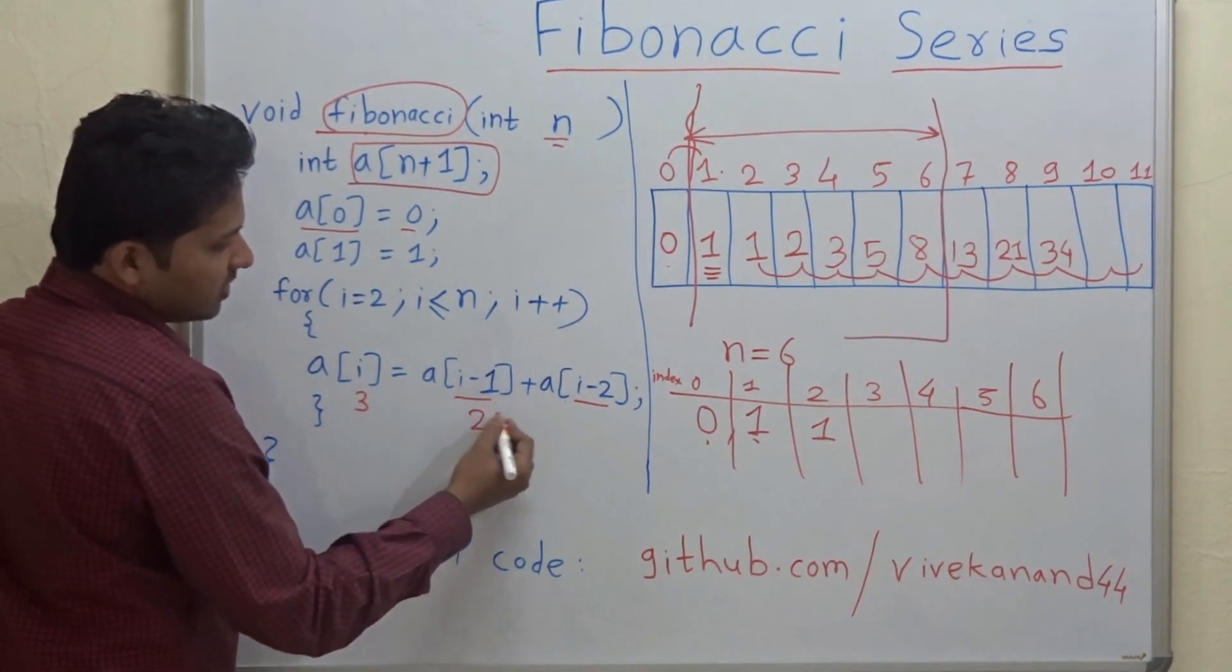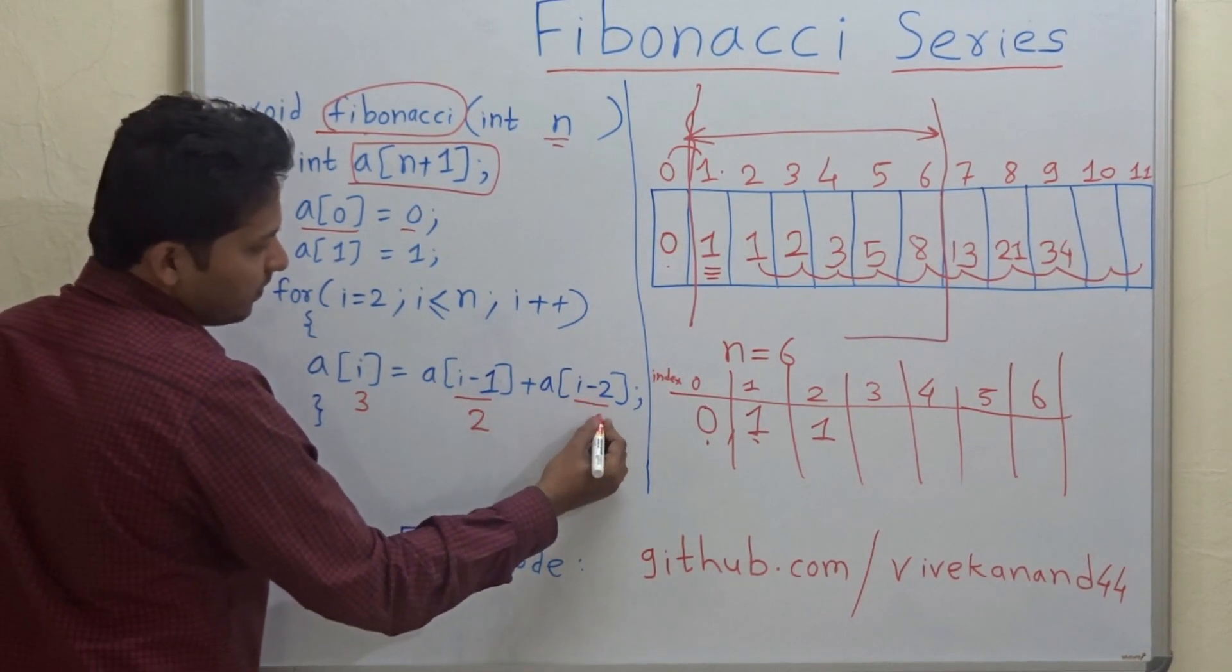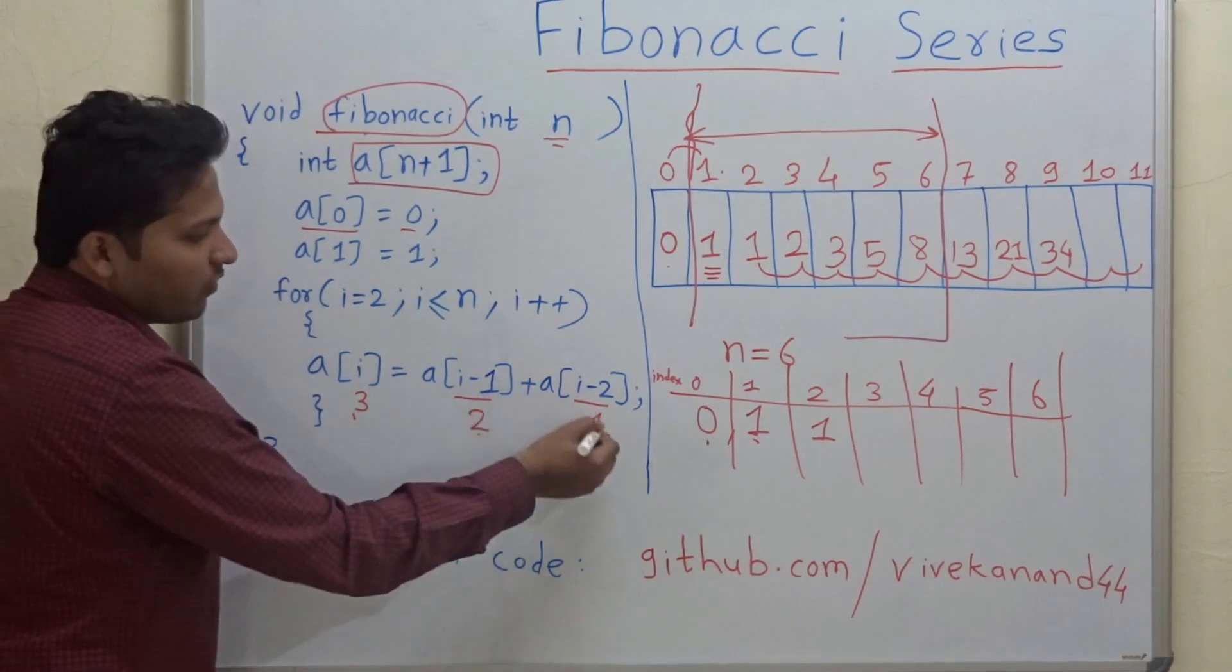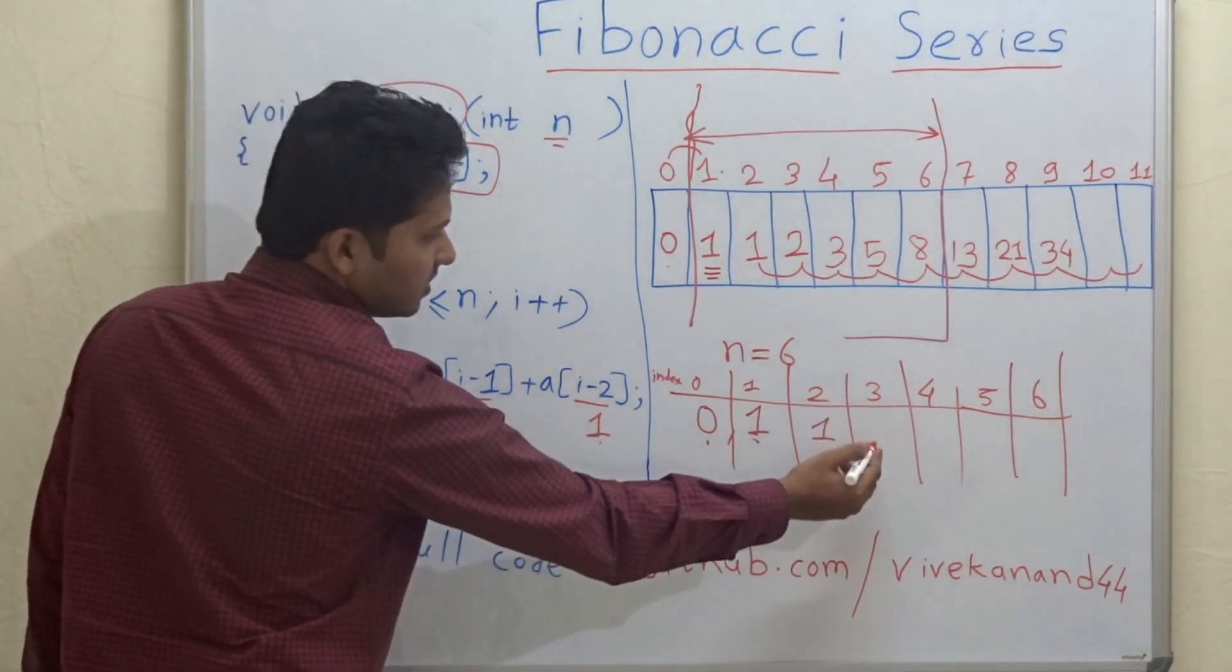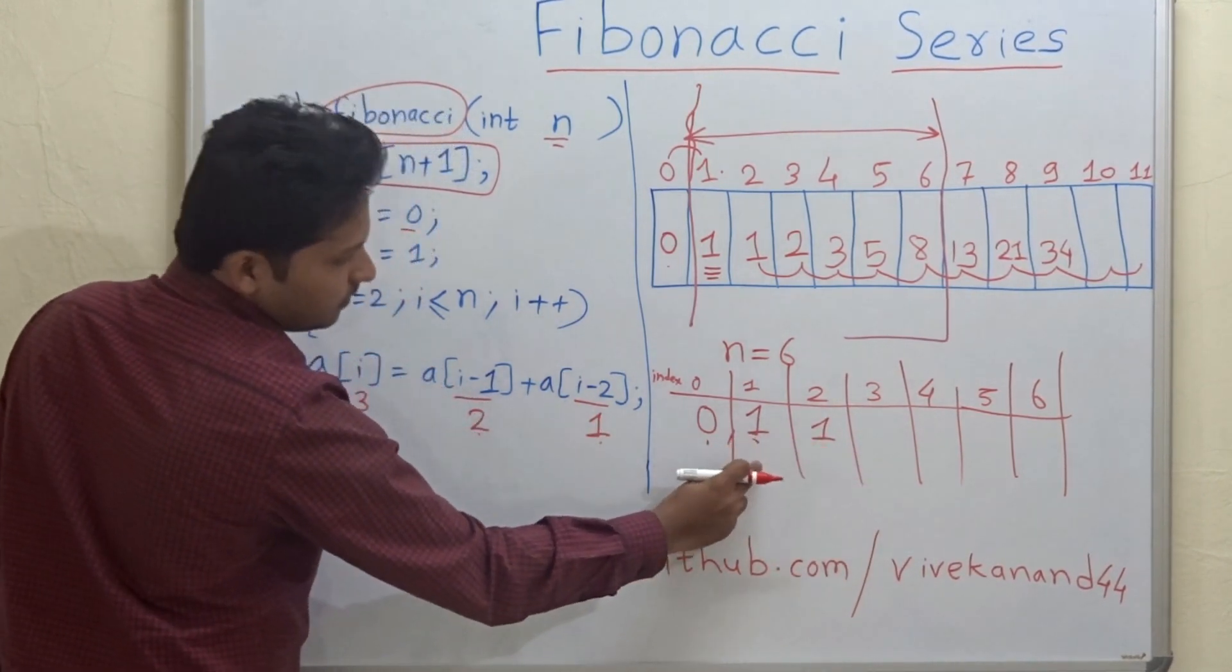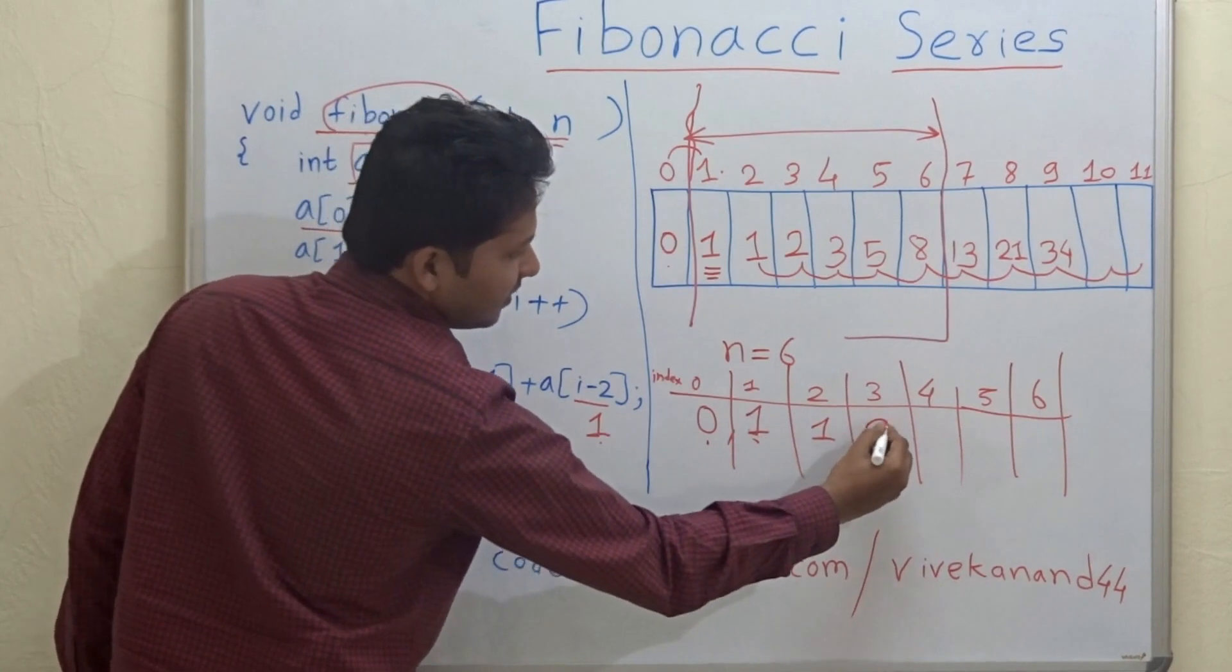So a[3] is equal to a[2] plus a[1]. A[3] is here, so it is equal to a[2] plus a[1], so 1 plus 1 is 2. Similarly, a[4] equals a[3] plus a[2], so it will be 2 plus 1 equal to 3.